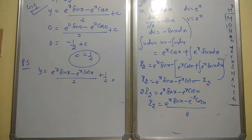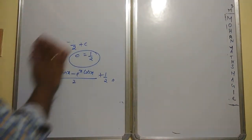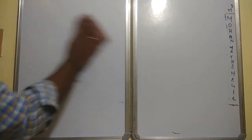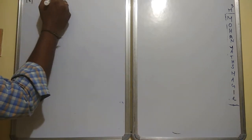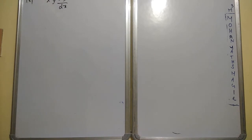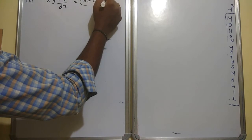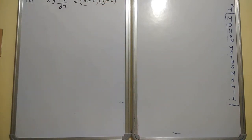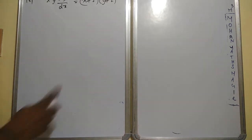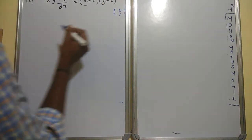Next is question 16. The differential equation is xy·dy/dx = (x+2)(y+2). They have given the point (1, -1) to find the particular solution. Since x and y terms are mixed, we separate: y dy terms on the left, x dx terms on the right.